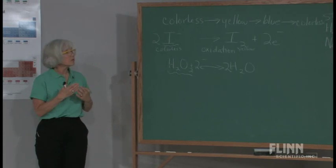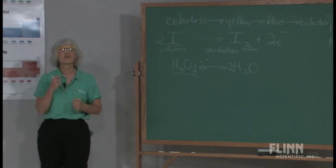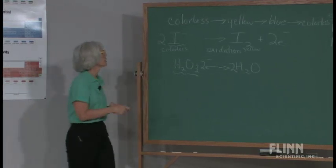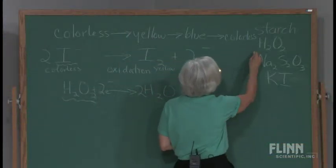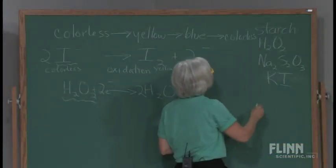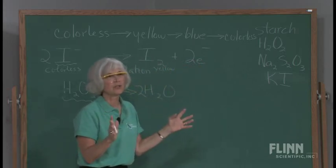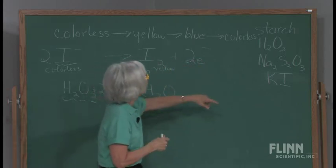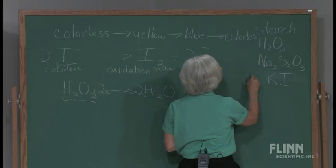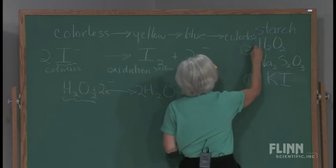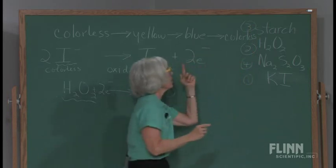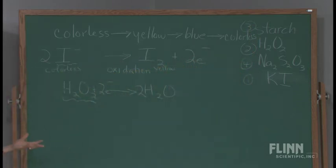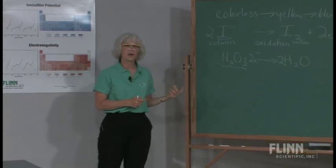We got the blue color with the third solution, so that third solution had to be the starch. So we know H₂O₂ and KI are the first two solutions — the KI was the first one I put on the magnetic stirrer, the peroxide was the second, and the starch was third. By process of elimination, going back to the original colorless color had to come from the sodium thiosulfate.